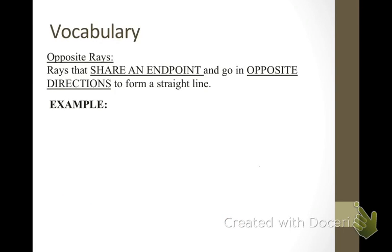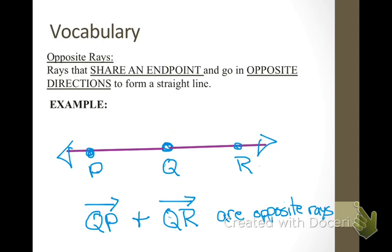There is a thing called opposite rays, and that is rays that share an end point and go in opposite directions to form a straight line. In this example, you can see that QR and QP are opposite rays. Notice that I've started each ray name with a Q, and the arrow goes to the right, not to the left. The arrow of the ray does not indicate the direction of the ray.